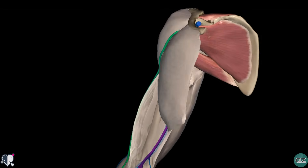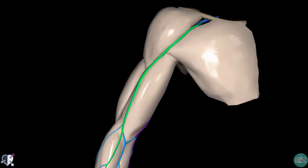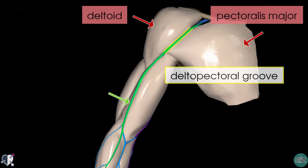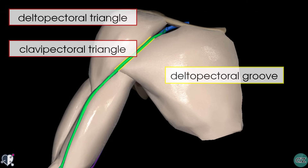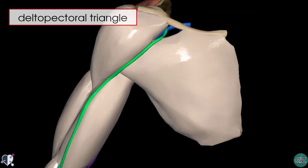Rotating back anteriorly, let's take a look at the course of the cephalic vein. After passing above the elbow joint, the cephalic vein ascends lateral to the biceps brachii muscle and passes between the deltoid muscle and the pectoralis major muscle in what is known as the deltopectoral groove. It then passes into the deltopectoral triangle, also known as the clavipectoral triangle, where it pierces the clavipectoral fascia to drain into the axillary vein. This triangle is bordered by the pectoralis major muscle, the deltoid muscle, and the clavicle.